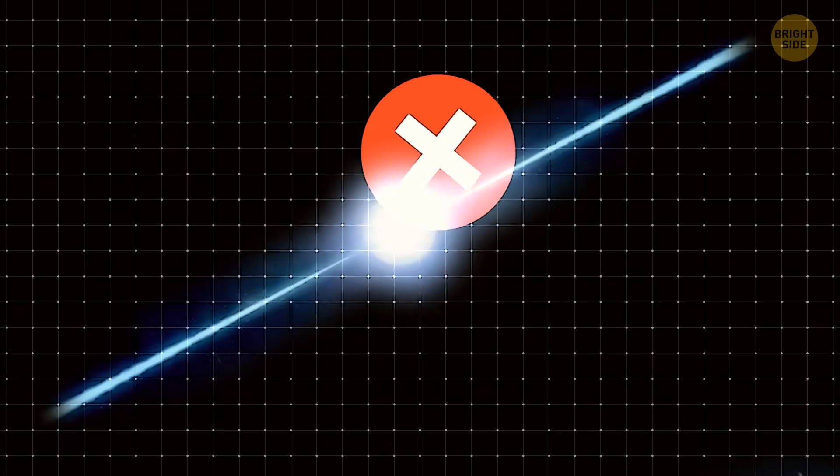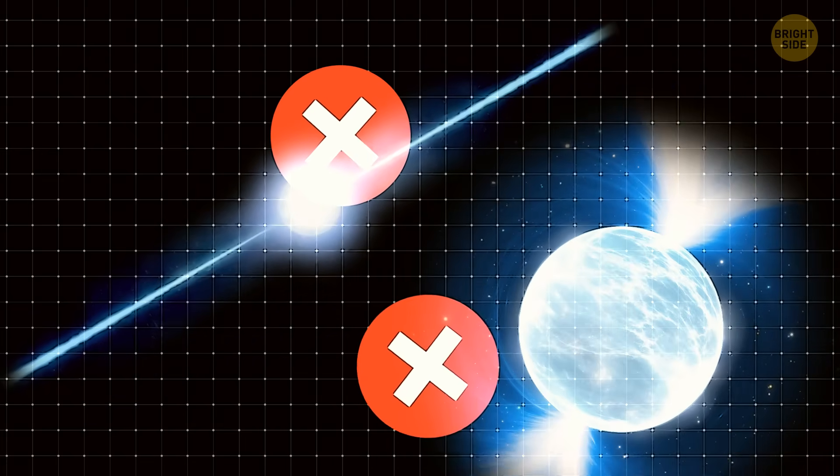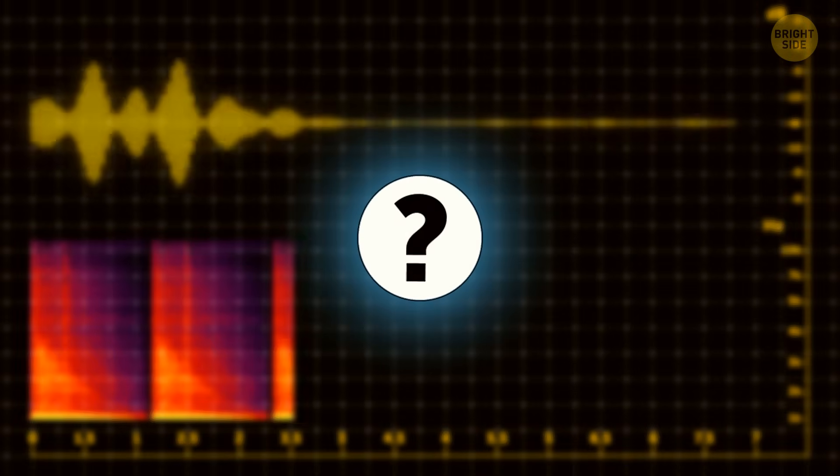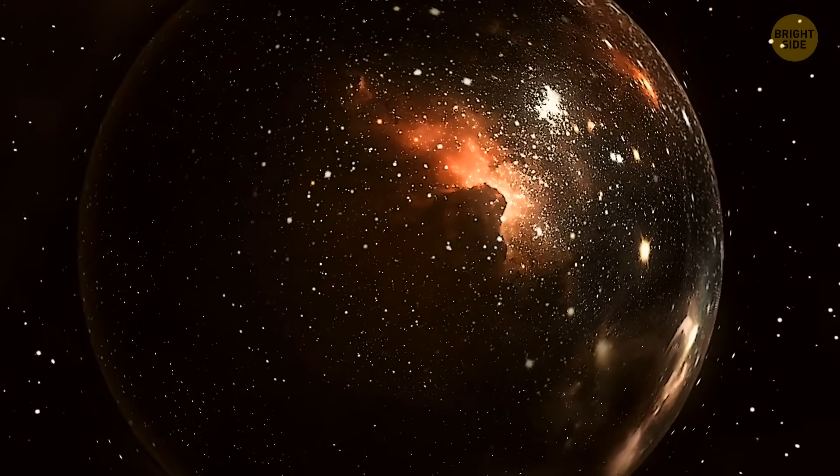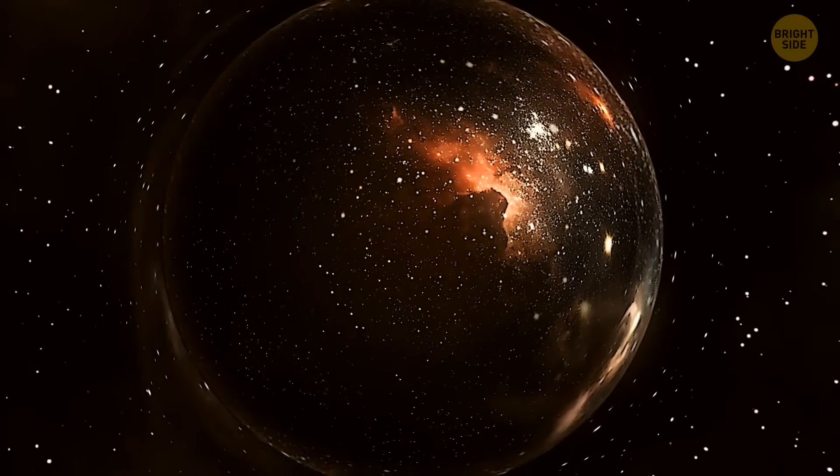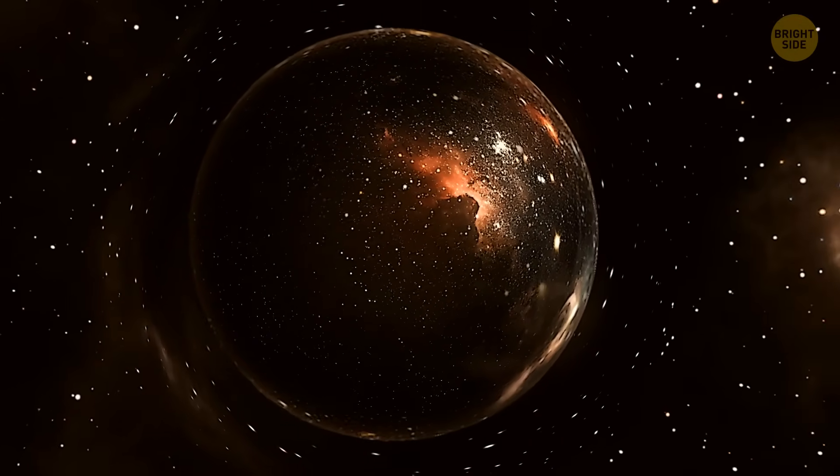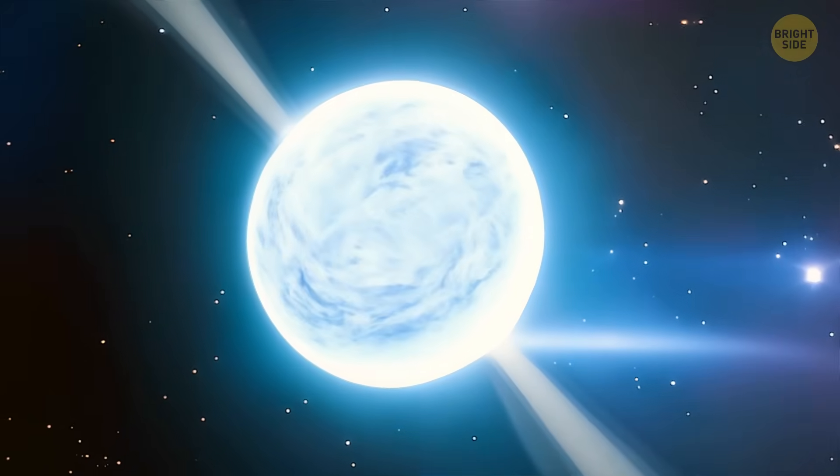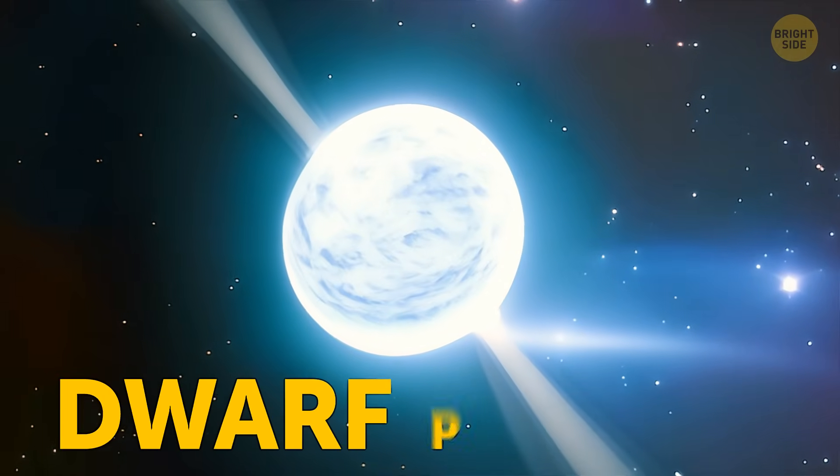So, we figured it's not a pulsar and not a magnetar. The signal's behavior is very strange and suggests an unnatural source. This means there might be something in the universe that scientists haven't fully explored yet. And there is a space object that we don't know much about. The final theory is the so-called dwarf pulsar.